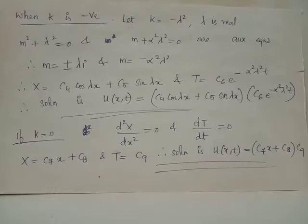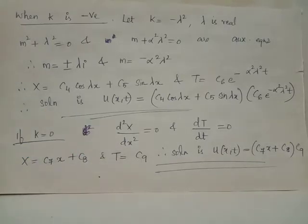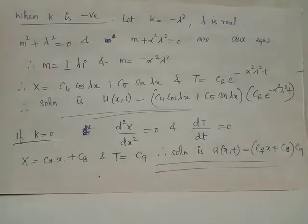The last case is for k = 0. In this case, the differential equations are rewritten as d²X/dx² = 0 and dT/dt = 0. Integrating both sides twice with respect to x gives X = c7·x + c8, and integrating with respect to t gives T = c9. Thus the solution is u(x, t) = (c7·x + c8) · c9.